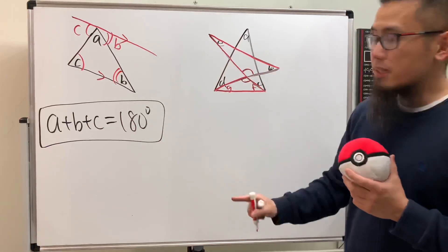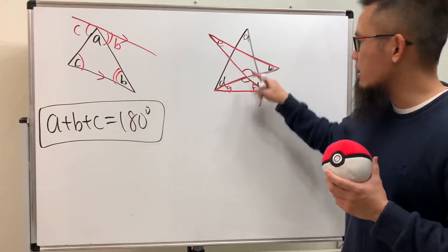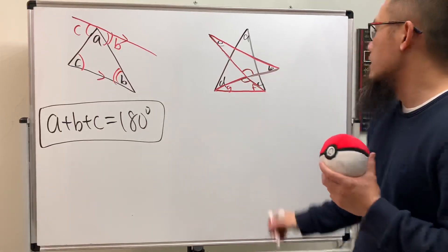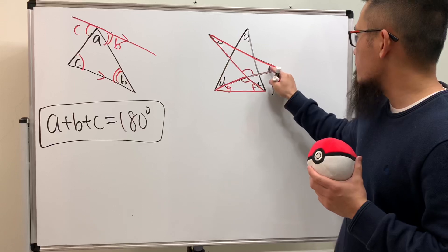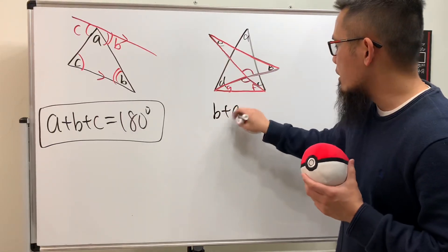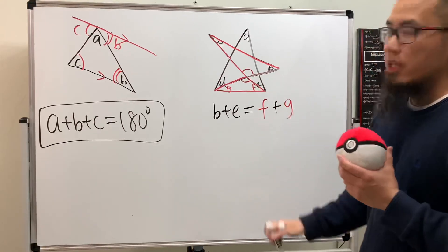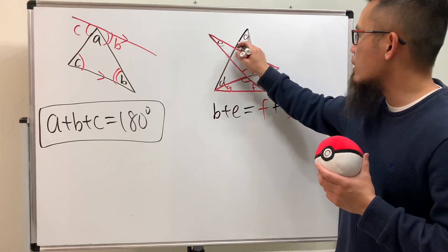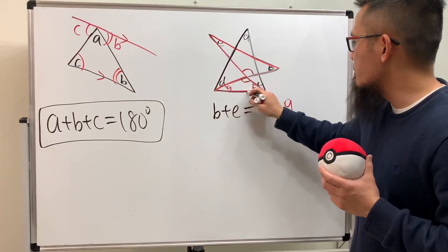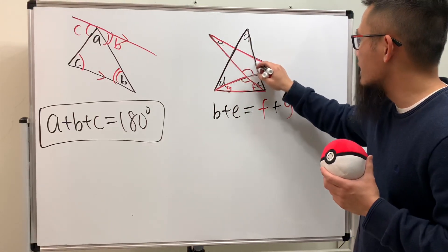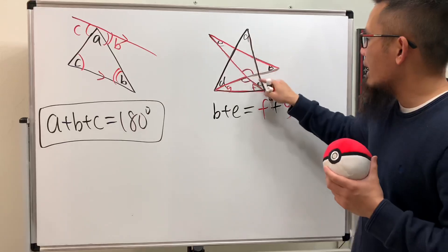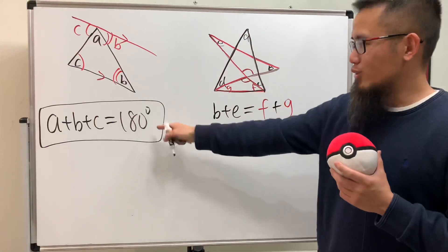So this angle right here is b, so I'm going to put down b plus e. This right here is going to be equal to f plus g. Now have a look right here at this triangle in black, so let me just trace it nicely for you guys. Yes, all the angles right here will add up to 180 degrees because we did that over there already.